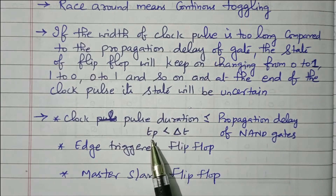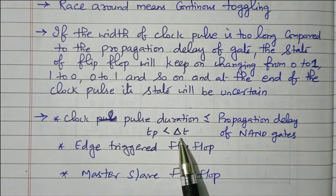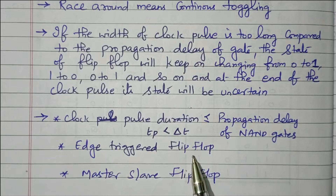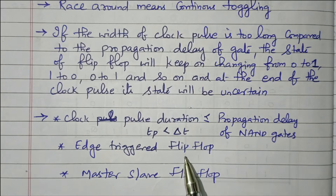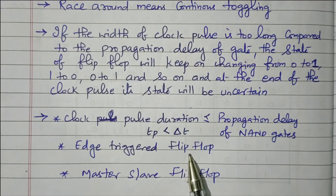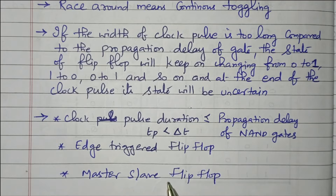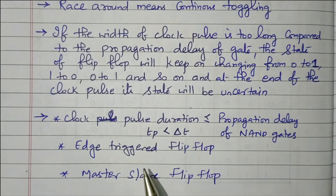The clock pulse duration should be less than or equal to the propagation delay of the NAND gate. That is, TP (clock pulse) should be less than DT, the propagation delay of the NAND gate. This is possible in edge-triggered flip-flops. Edge-triggering means during the positive edge or negative edge: from 0 to 1 is positive edge triggering, 1 to 0 is negative edge triggering. Another possibility is the master-slave flip-flop. By using master-slave or edge-triggered, we can avoid this race-around condition.